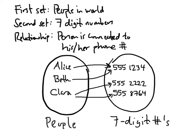That means this isn't a function — so this is a problem. Clara, which is something in the first set, corresponds to two things in the second set, and that means this isn't a function. It's a perfectly fine relationship — we can talk about people who have multiple phone numbers — but it's just not a function. Functions are special, and not every relationship is a function.